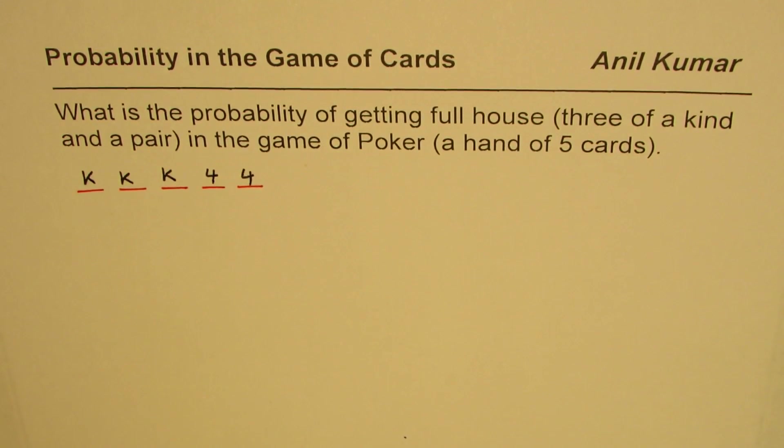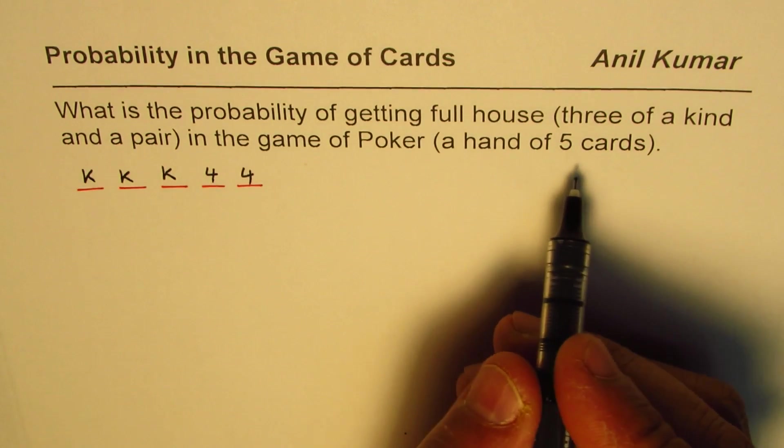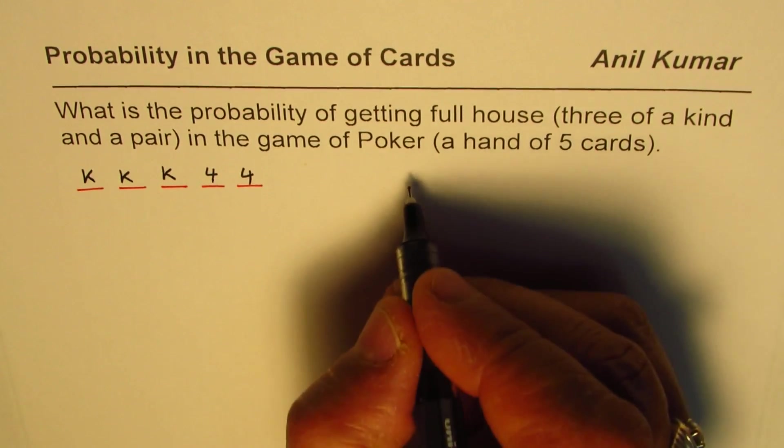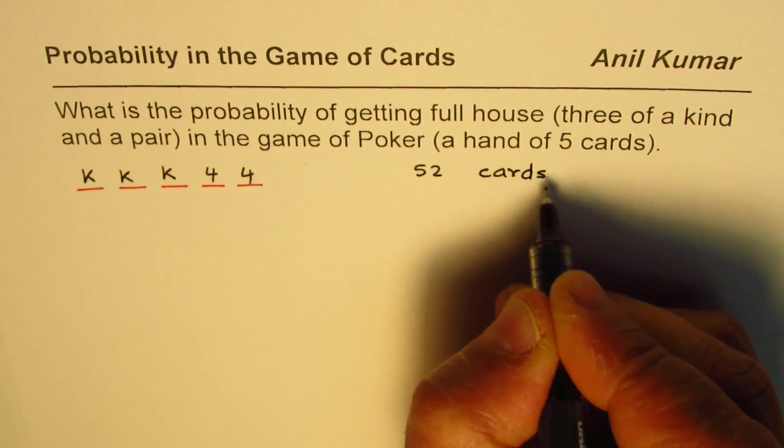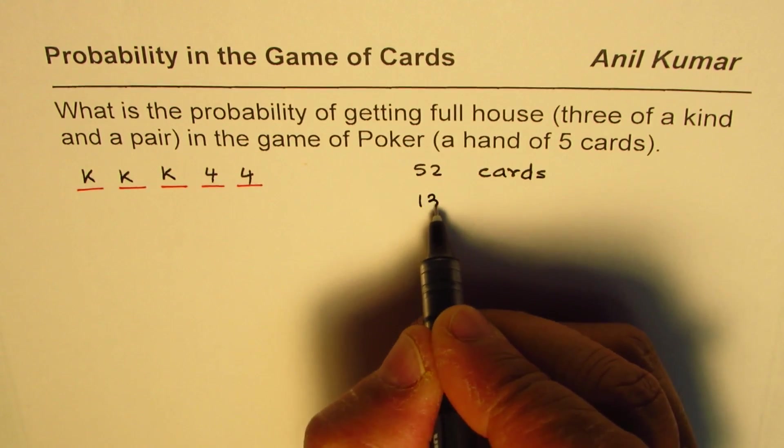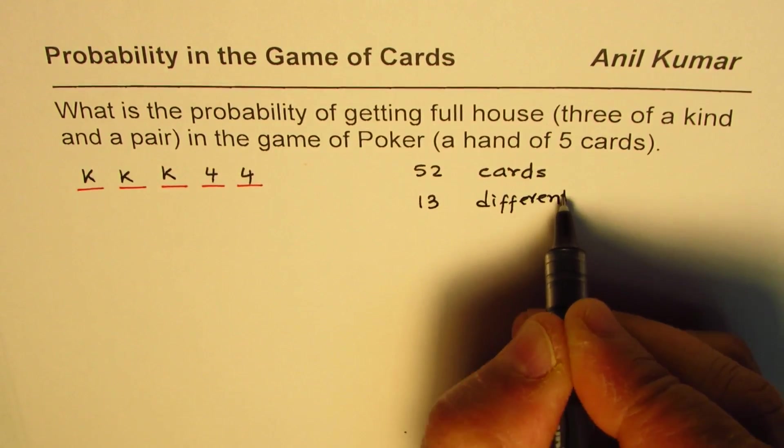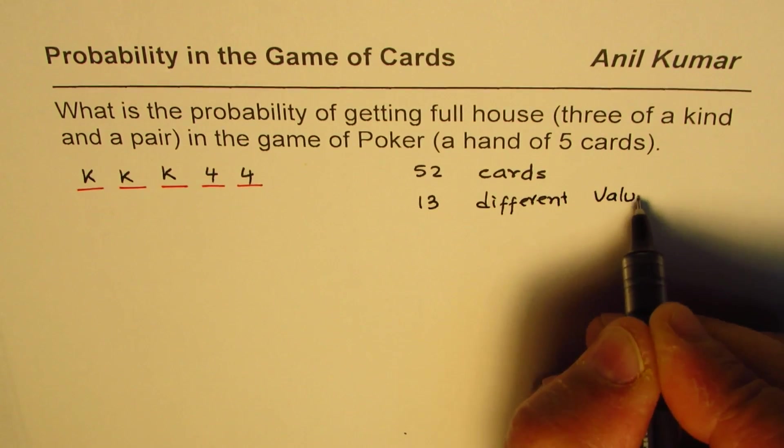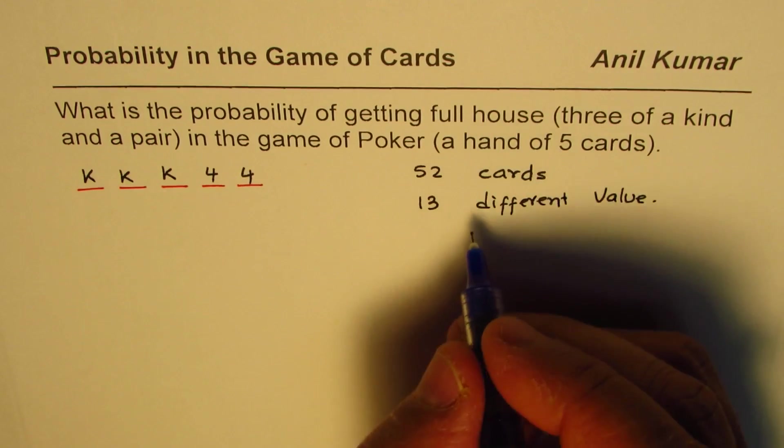What is the probability of getting this kind of a card? So that is the question for you. Let us see how to solve this. Now we know in the game of cards we have 52 cards, right? So there are 13 different values.